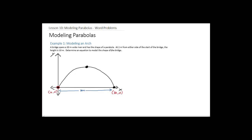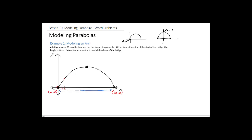Sometimes you have to draw it a couple of times — don't freak out if your first drawing didn't work. So far we have two points. We don't know the vertex yet. At two meters from either side of the start of the bridge, the height is 10 meters. So that gives us another point: (2, 10). Going backwards from 30, two meters in gives us (28, 10) as well.